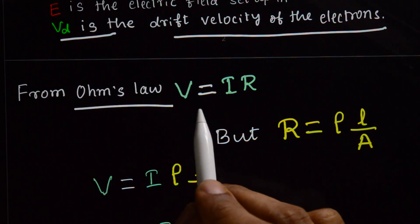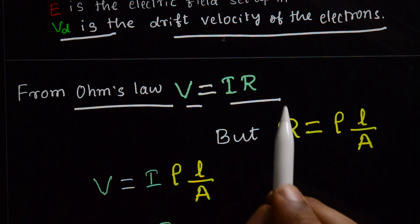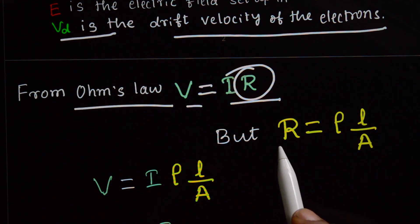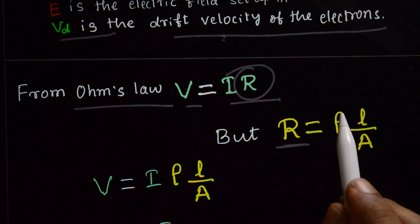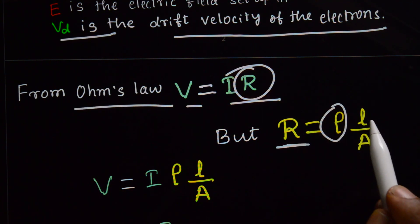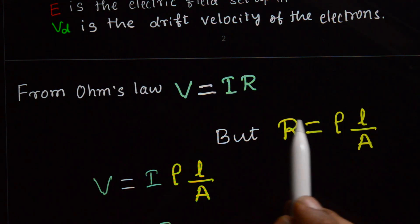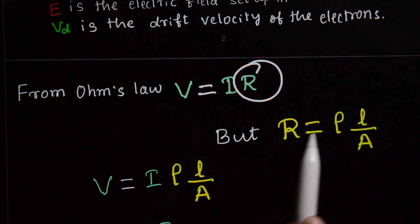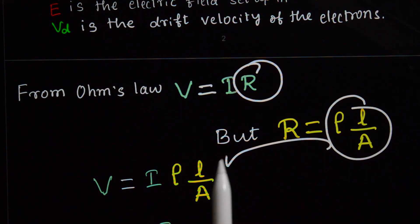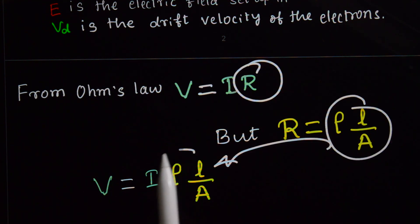And from Ohm's law, you can write V is equal to I into R. But R is equal to rho into L divided by A. And substitute that value of R, you will get this.